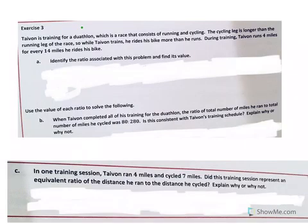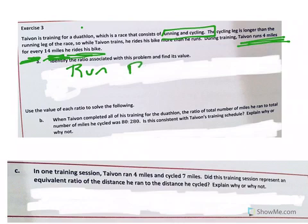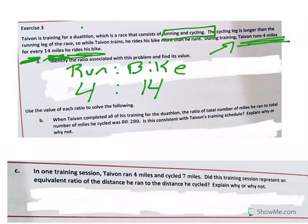Okay, let's look at another example here, exercise 3. And by the way, these are all from Eureka Math. It says, Tavon is training for a duathlon, which is a race that consists of running and cycling. The cycling leg is longer than the running leg of the race. So while Tavon trains, he rides his bike more than he runs. During training, Tavon runs four miles for every 14 miles he rides his bike. Part A says, identify the ratio associated with this problem and find its value.